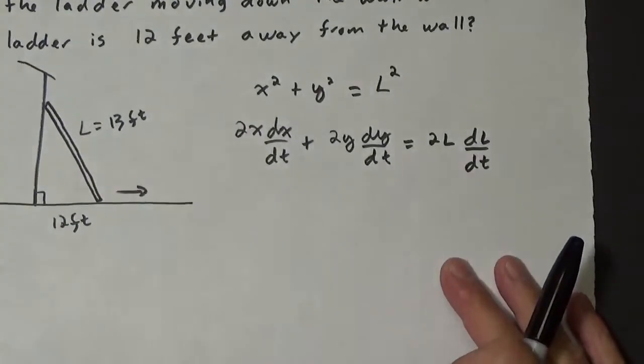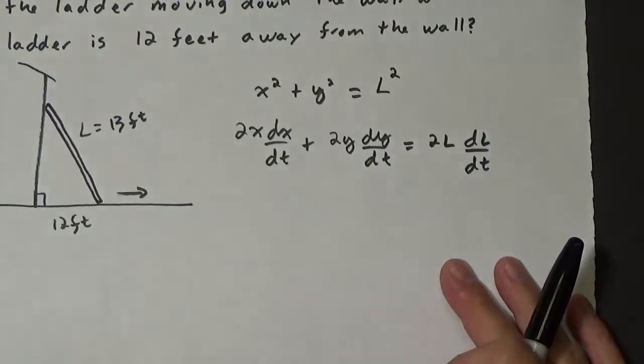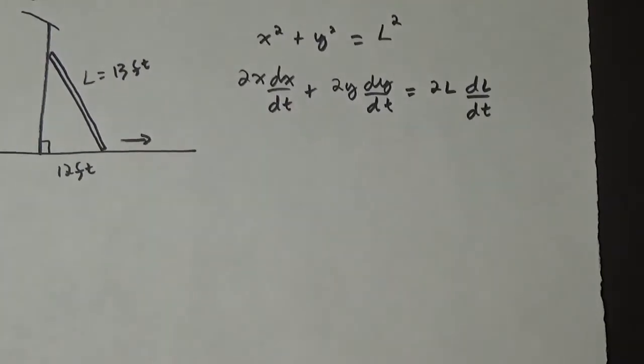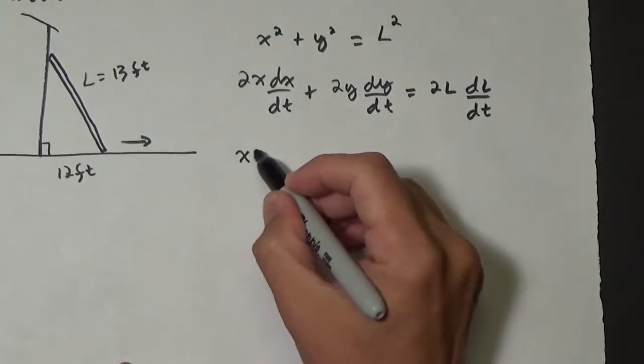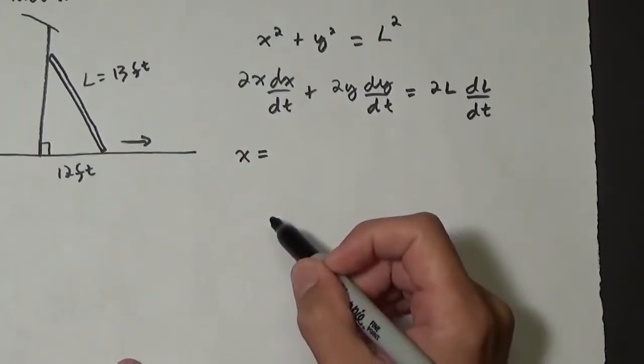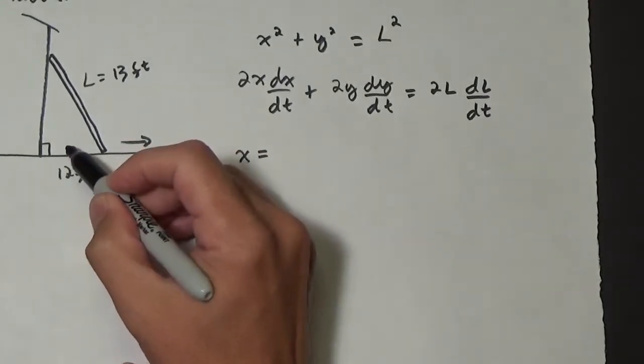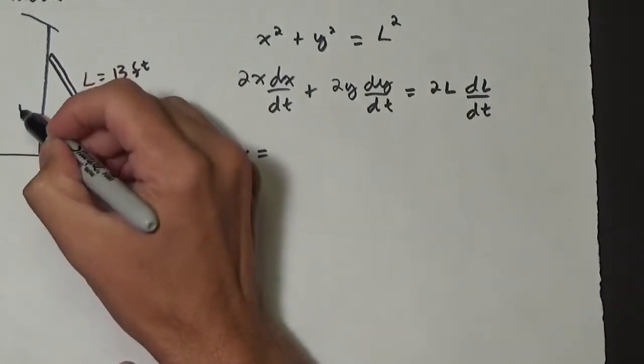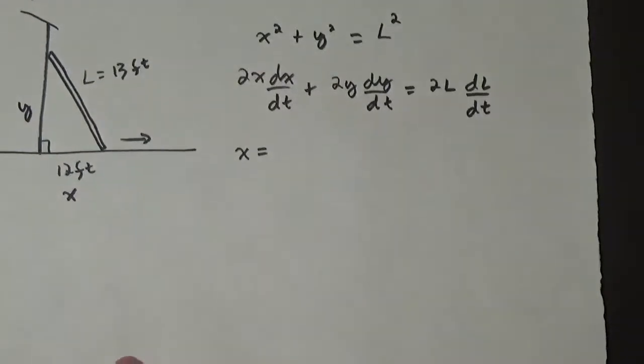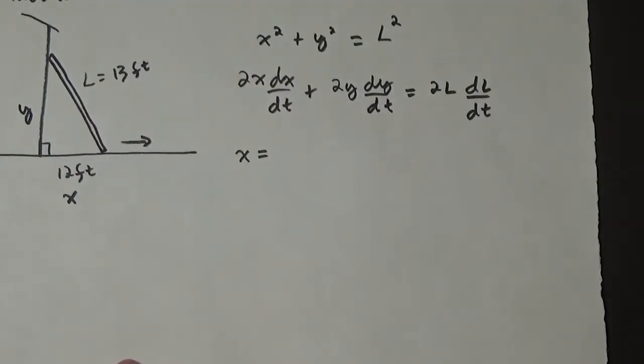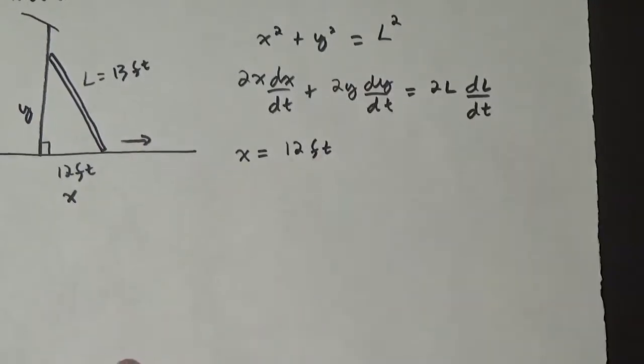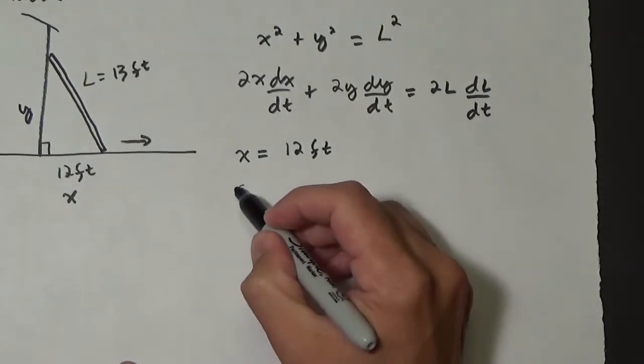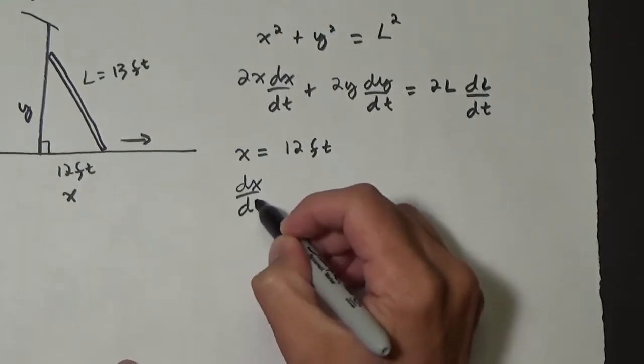Okay, so now that we have all this information here, we've got to figure out if we have values for all of this. So let's go through. We have x. So I guess we first should label that this was x, this is y, and that's L. We better be clear about that. So x, we know x is 12 feet.